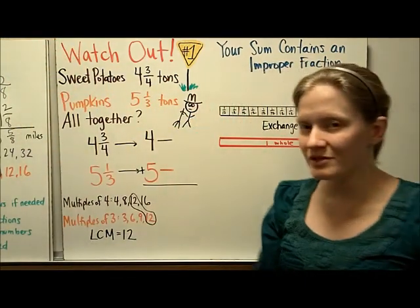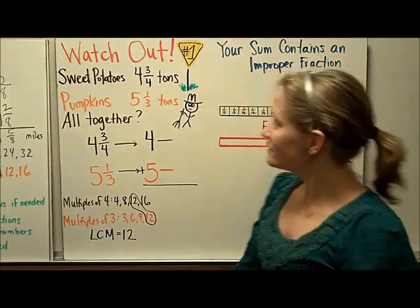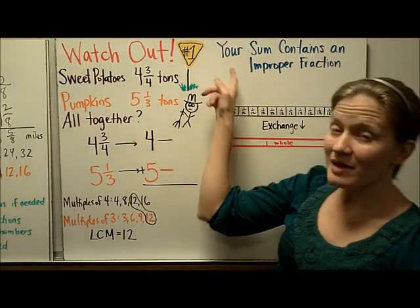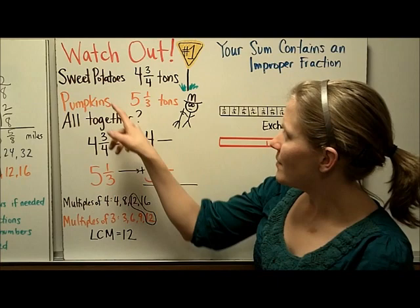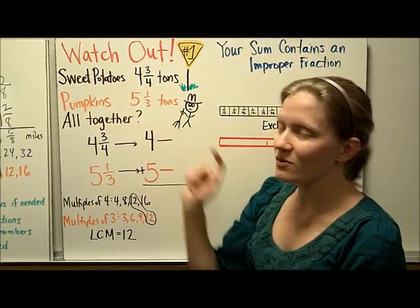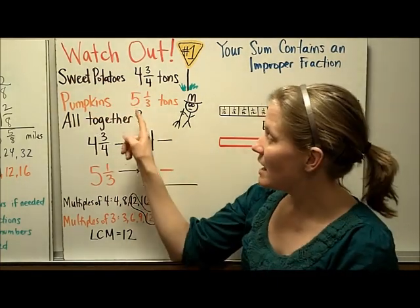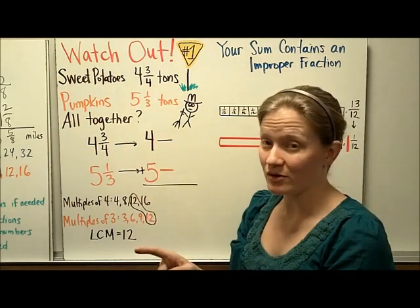There are two different kinds of problems that you want to watch out for. So here's the first kind. When your sum contains an improper fraction. Let's see how that would happen. Pretend that there was a farmer who grew 4 3/4 tons of sweet potatoes and also grew 5 1/3 tons of pumpkins, and he wanted to know how much that was altogether.